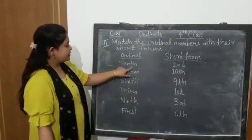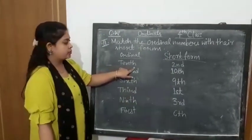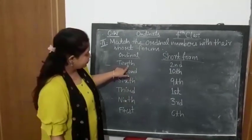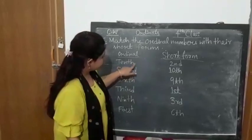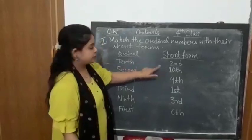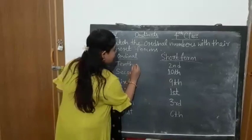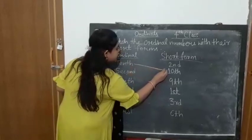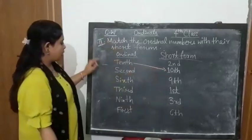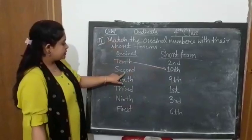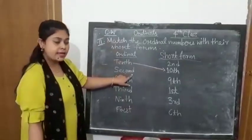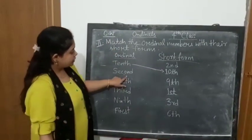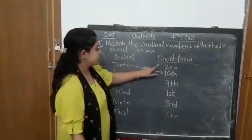See the first one: T-E-N-T-H, Tenth. So see where is tenth? Here. Then match like this. Now, S-E-C-O-N-D, Second. See where is second in the short form? Here it is.